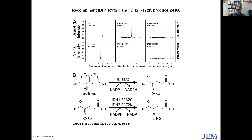This is the canonical reaction. If you take the purified wild-type enzyme — the normal, non-mutated enzyme — it will do exactly what we described: take isocitrate, the human enzyme, and convert it to alpha-ketoglutarate, oxidizing the carbon from hydroxy to a carbonyl carbon, generating NADPH.